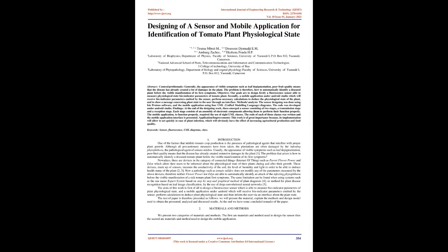Application and improvements: this work is of great importance because its implementation will allow to act quickly in case of plant infection, which will obviously have the effect of increasing agricultural production and food quality. Keywords: sensor, fluorescence, UML diagrams.